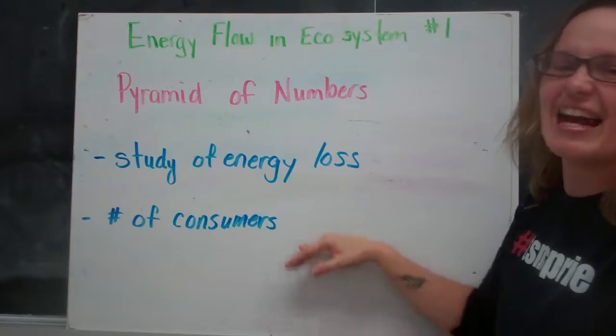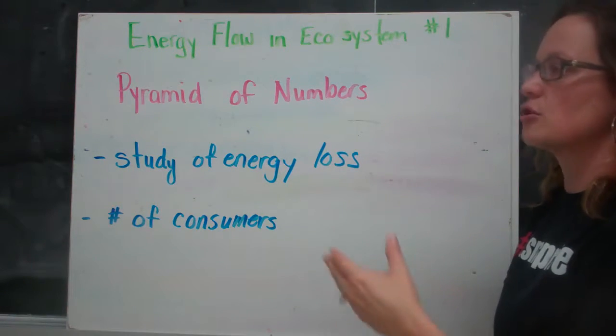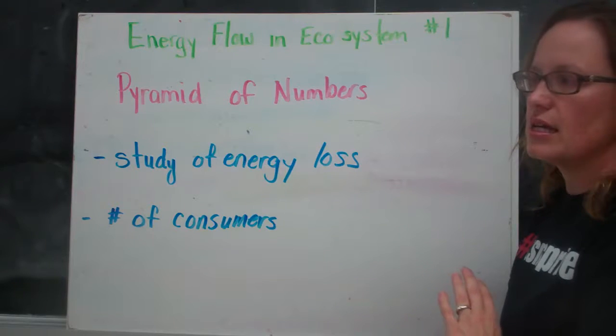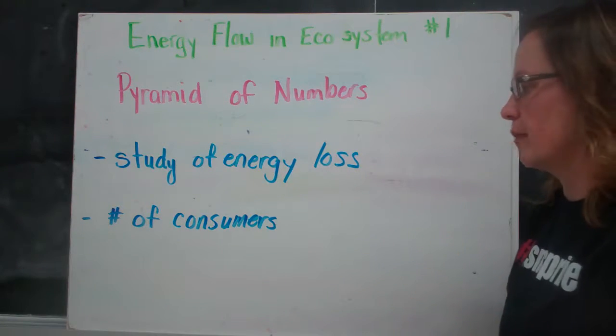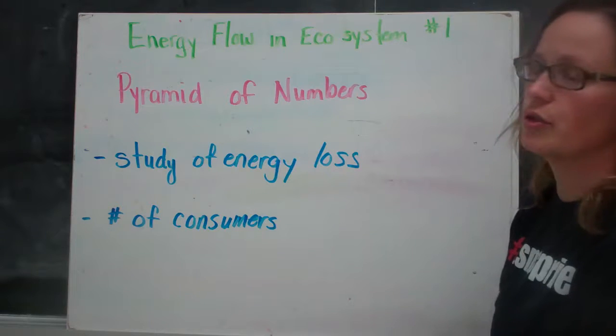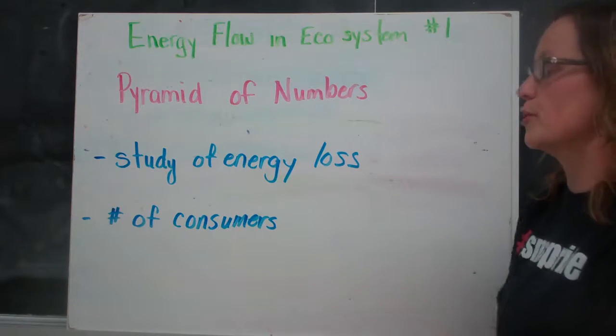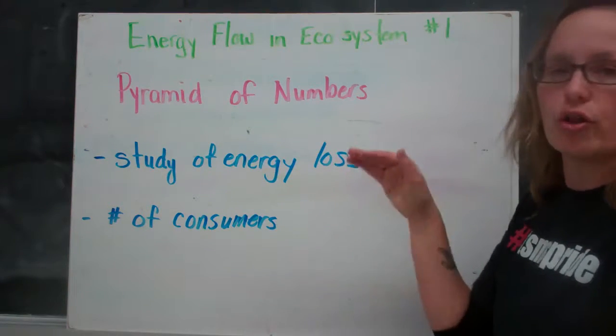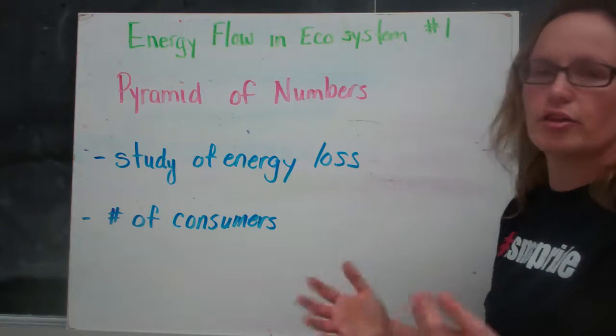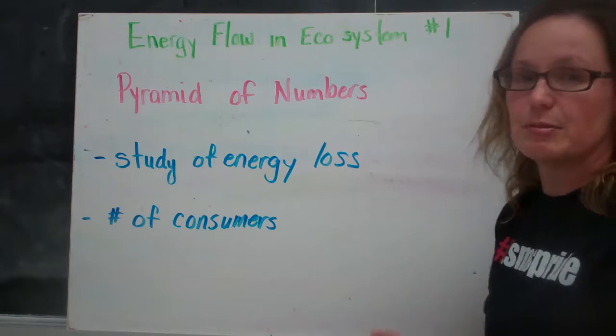So as we move up the pyramid, there's an energy loss. And ecologists will study the loss along each level of the pyramid. And they also use it to record the number of consumers and producers along the way to really look at those interactions and balances between those elements.